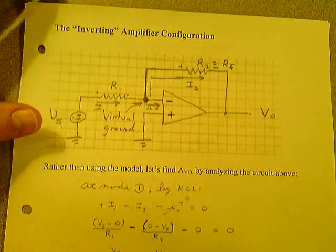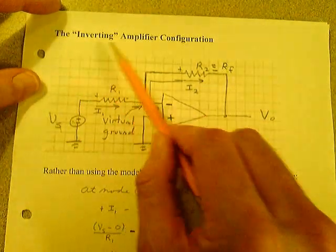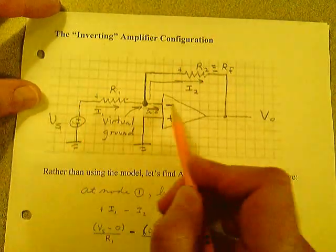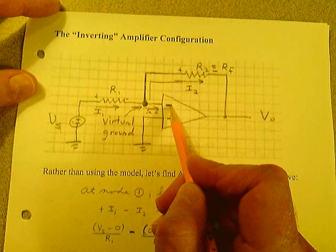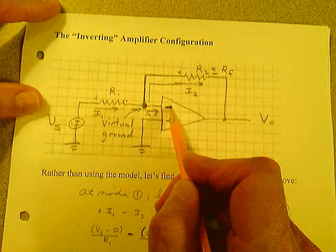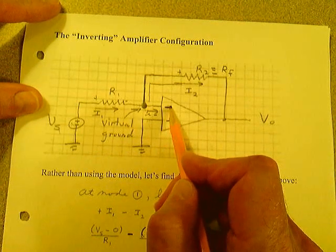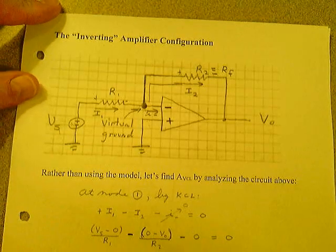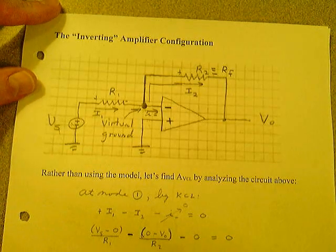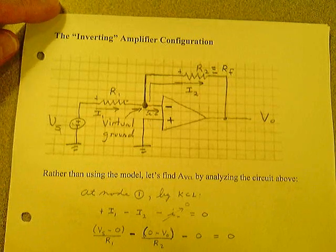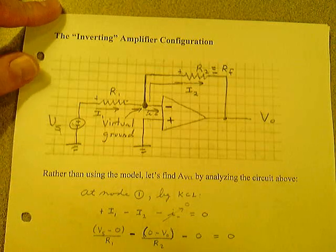The second configuration we're going to talk about is the inverting amplifier circuit. In the inverting amplifier circuit, the voltage source feeds into the inverting input. If you see the voltage source feeding into the inverting input, that's called an inverting amplifier configuration. You have to be able to recognize that — is it a unity gain amplifier, an inverting amplifier, or a non-inverting amplifier?